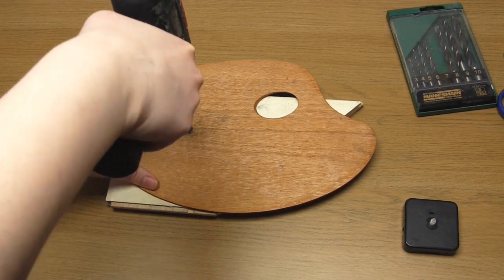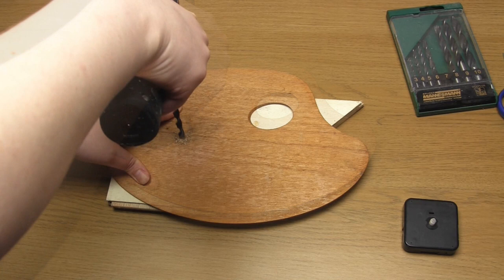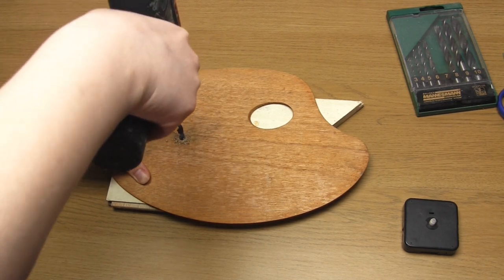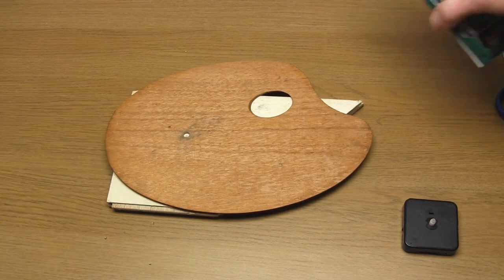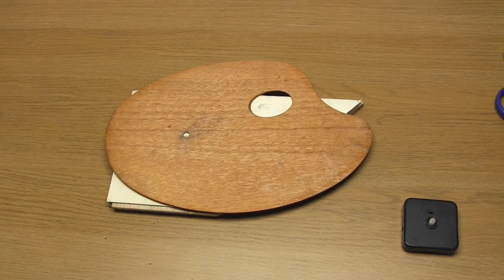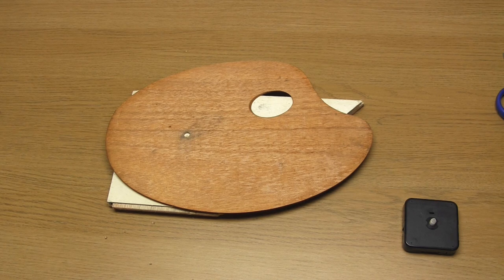Then you need to place the palette on a piece of scrap wood and drill vertically through this mark. The size of the drill bit you use should be just a tiny bit bigger in diameter than the clock spindle. My spindle was just over five millimeters in diameter and I used a seven millimeter drill bit.